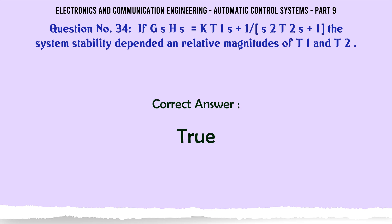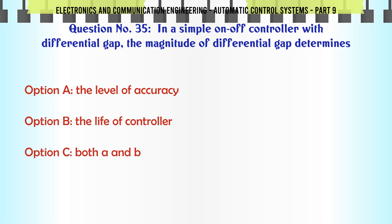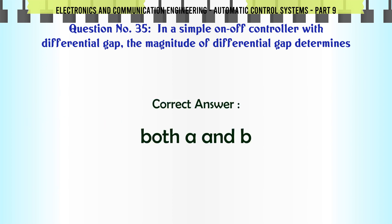In a simple on-off controller with differential gap, the magnitude of the differential gap determines: A. The level of accuracy, B. The life of controller, C. Both A and B, D. Neither A nor B. The correct answer is: Both A and B.